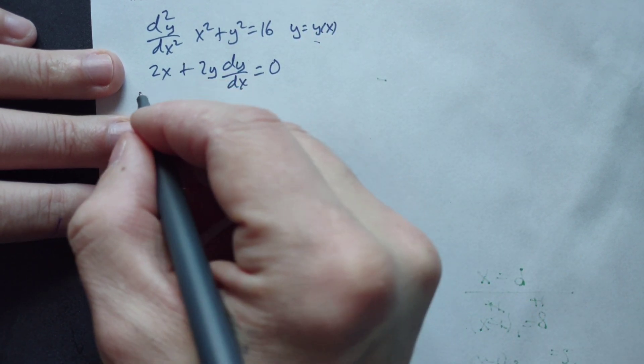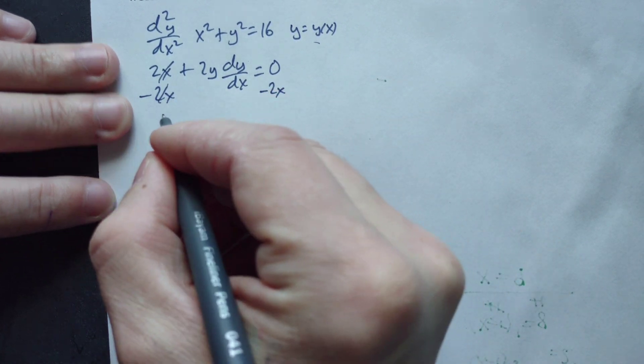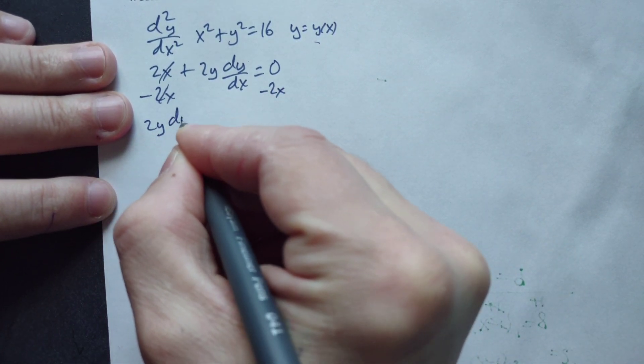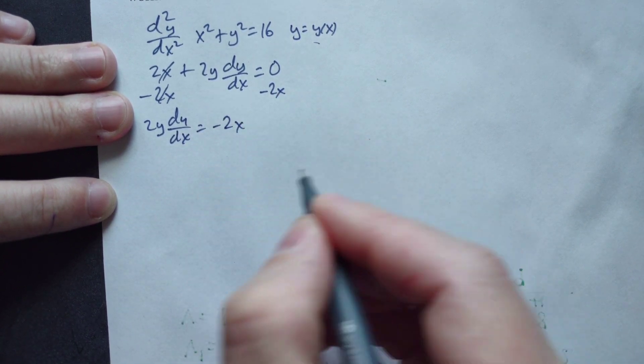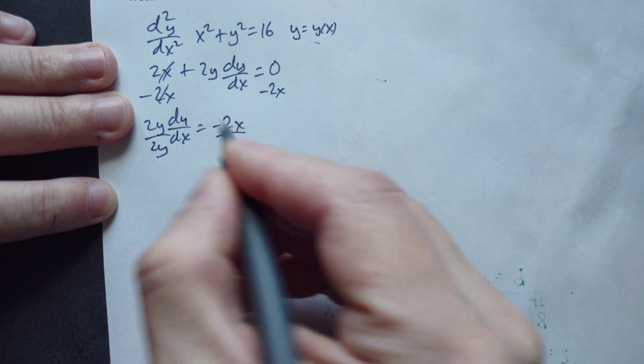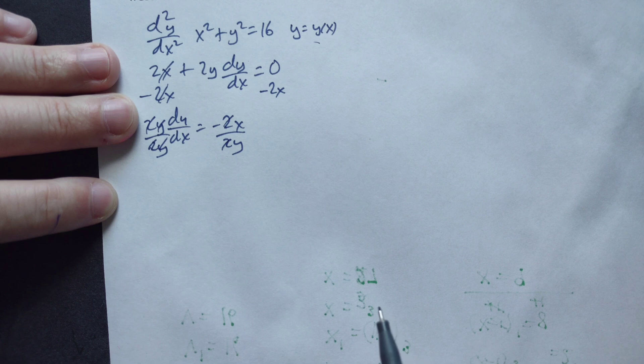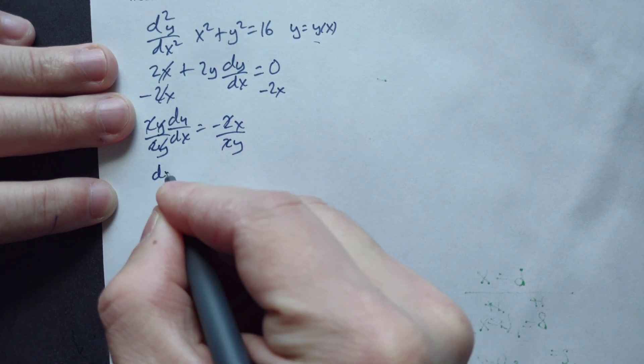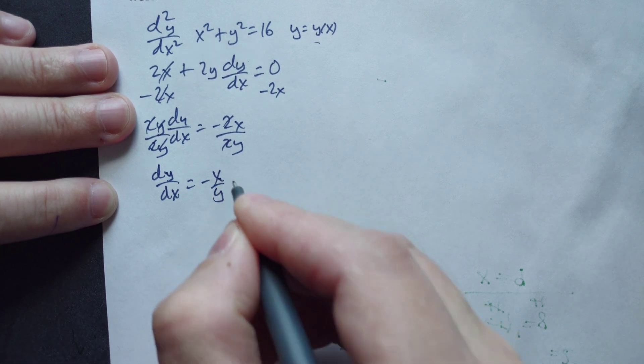From here, solve for dy dx. Minus 2x here gives us 2y dy dx equals negative 2x. Divide both sides by 2y. These cancel, and the negative and positive 2s cancel off, leaving dy dx equals negative x over y. That's the first derivative.